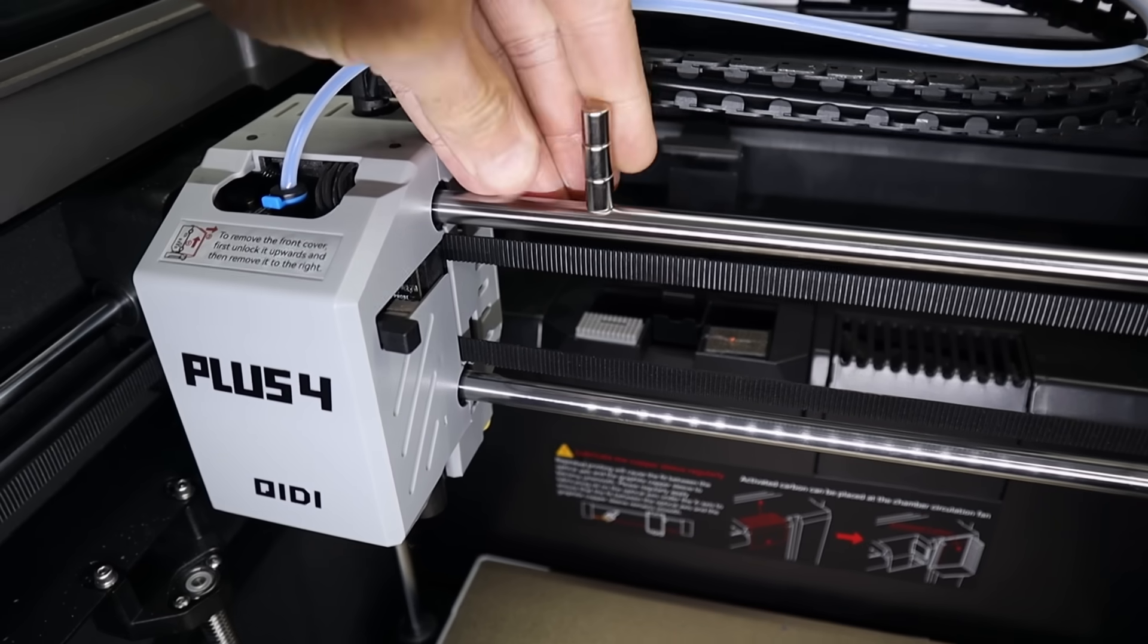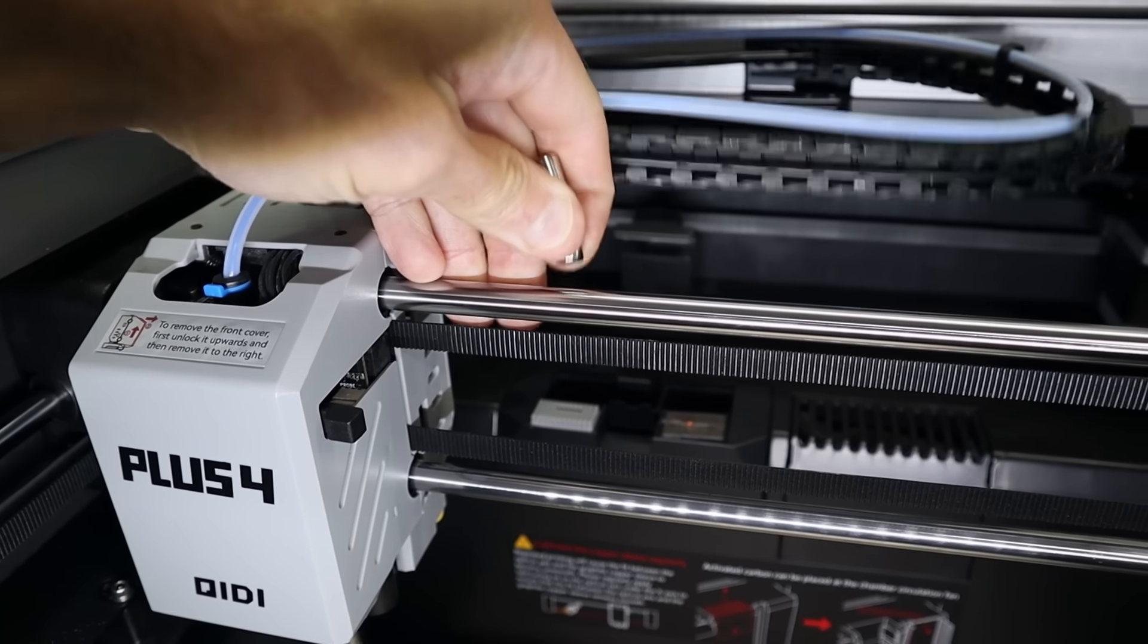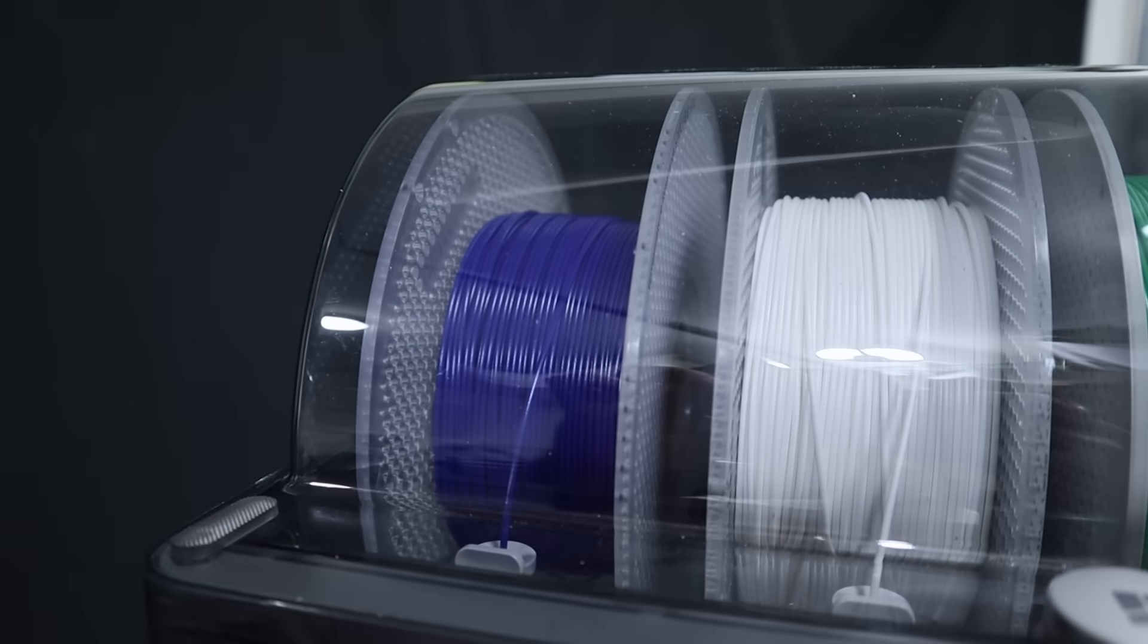Now that alone does not mean more VFAs because it can be compensated for. For example, on my Plus 4, it also has steel rods on the x-axis and it produces prints with very fine VFAs. They're actually so fine that it's hard to see them. So I think to be sure, what we really need to do is test it out.